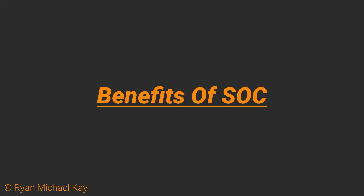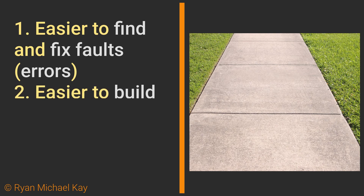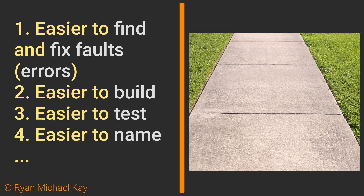A modular system — that is, a system which applies separation of concerns — provides these benefits. If one part breaks, it is easier to find the fault and to fix it. It is easier to build each part in isolation of the other parts. It is easier to test each part in isolation of the other parts. It is easier to name each part. There are other benefits, but that should suffice for now.